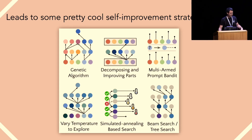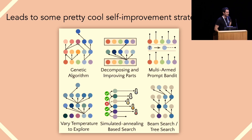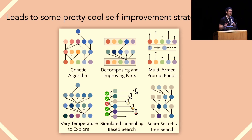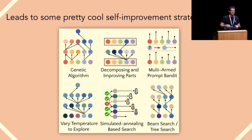It turns out that when you pass this to GPT-4, it comes up with some pretty interesting strategies for improving programs — essentially just by asking it to improve arbitrary code. It proposes using genetic algorithms. It proposes to decompose the program and improve it part by part. One of my favorite approaches: it proposes to try different strategies multiple times because there's uncertainty in the meta-utility calculation, and it basically proposes doing an upper confidence-bound search on different improvement strategies.